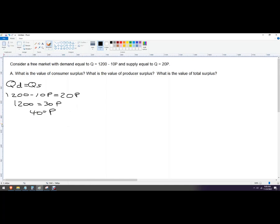I can plug this into either one. I'm going to plug it into both and solve for quantity. This will give me what that equilibrium quantity is. So it's easier to do quantity supplied. Quantity supplied is 20 times 40, and that gives us 800.